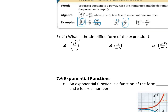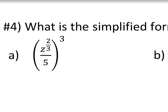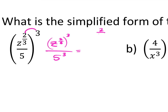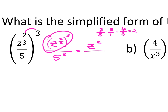Let's try letter A: distribute the 3. We get z to the 2/3 to the third power, over 5 to the third. For the exponent: 2/3 times 3 = 6/3 = 2, so that's z squared. 5 to the third is 125. The whole thing simplifies to z squared over 125.